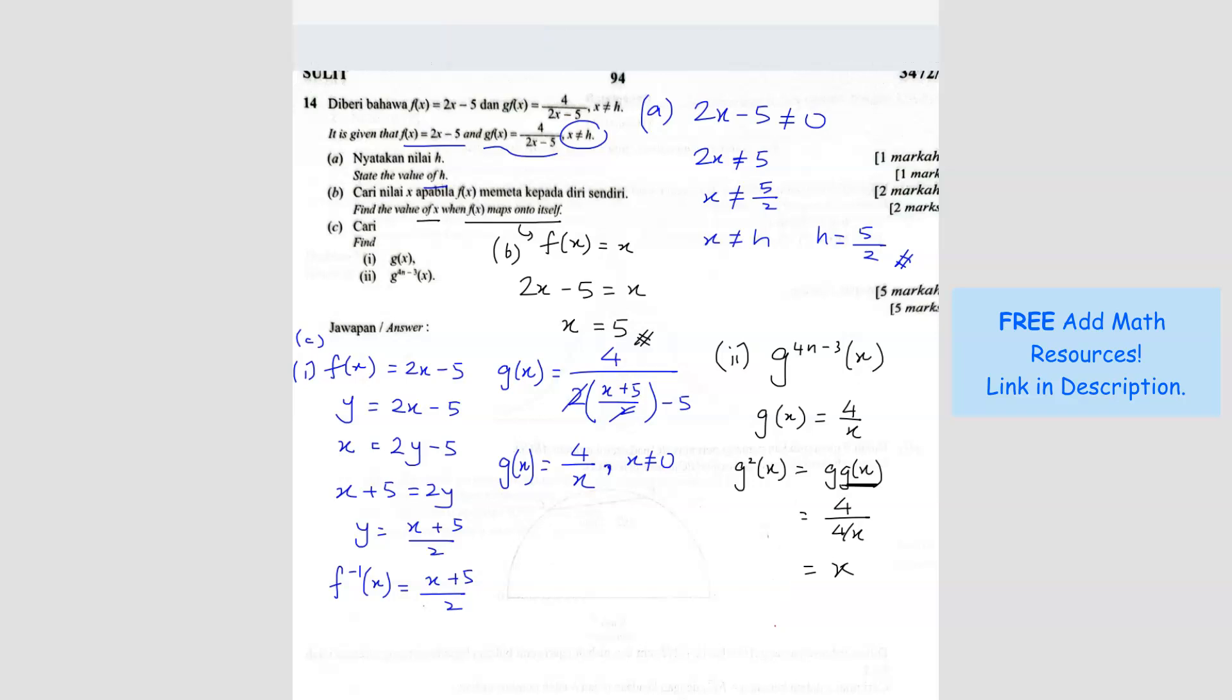Now we find g cubed. So g cubed x will be g(x) and then you substitute g squared x into the g(x). Which means this one substitute into the g(x) here. So you get 4 over x again.